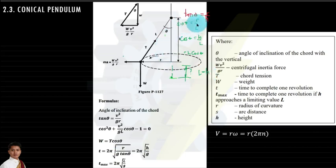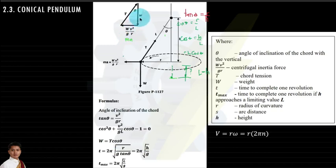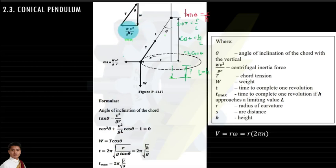Using theta we can also relate the inertia force — w/g multiplied by v²/r — and the weight. That gives us: tangent theta = v²/gr, since the weight w cancels out. There is also the equation: cosine²theta + (v²/gl)·cosine theta − 1 = 0.